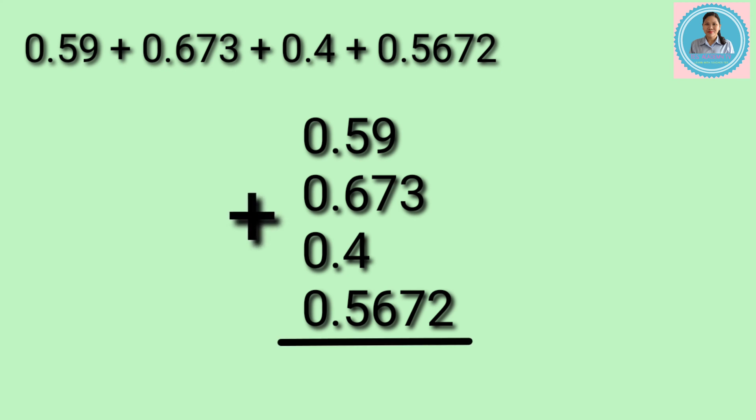Let's add now. We will start adding from right to left. Since there is only one digit in the ten-thousandths place, we will just bring down 2. Next, add 3 plus 7 equals 10. Since 10 has 2 digits, we need to regroup. So, we bring down 0 and carry 1.